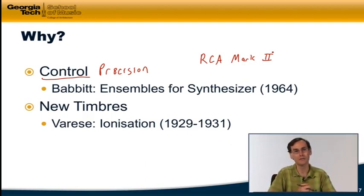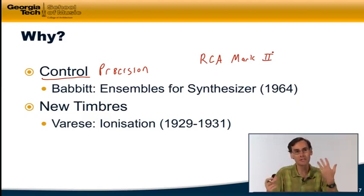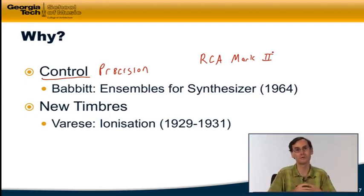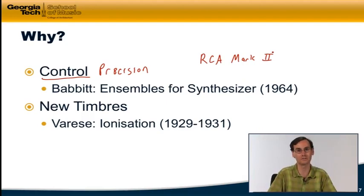He often wrote for human musicians on conventional instruments, but he found that the RCA Mark II let him achieve this level of precision and kind of realize these structures in ways that might not be possible if he was working with traditional instruments. 'Ensembles for Synthesizer' is a great example of the work he did with the RCA Mark II.